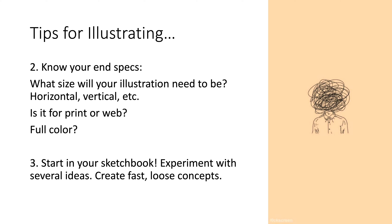Tip number three — and you guys probably know I'm going to say this — start in your sketchbook. Experiment with several ideas and create fast, loose concepts. Don't come up with one concept and then try to force the illustration. Get lots of ideas out and start practicing so you can come up with more creative solutions. This image here is a good example — it would fit with an article about mental health, intellectual mind, brain, or things about thinking. It's a loose, fast, simple style, but it gets the message across.